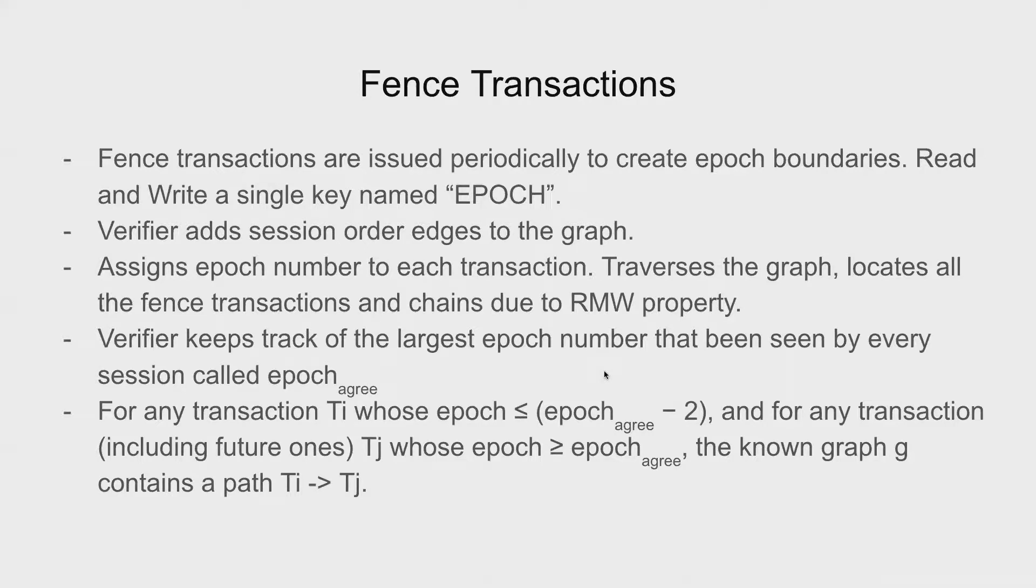Fence transactions are issued periodically by the clients to create epoch boundaries. So they read and write a single key named epoch. So whatever has happened between those two epochs can be grouped together. The verifier adds the session ordered edges to the graph. So each of these fence transactions are issued in one particular session. So that is why the verifier is able to do that. It also assigns epoch number to each transaction. So it traverses the graph, locates all the fence transactions that have happened and chains them due to the read, modify, write properties that we saw here for this epoch key. The verifier also keeps track of the largest epoch number that has been seen by every active session. And that is termed as epoch agree.